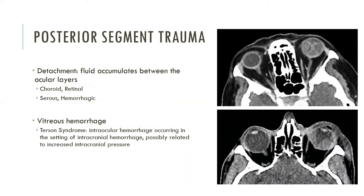Ocular trauma may cause serious fluid or blood to collect between the layers of the globe, leading to detachment of the retina or choroid from the remaining layers. Choroidal detachment occurs when fluid accumulates between the sclera and the choroid, typically assuming a biconvex or lentiform configuration along the medial and lateral walls of the globe, diverging posteriorly and creating an hourglass shape within the center of the globe on axial imaging. Retinal detachment allows fluid to accumulate between the retina and the choroid. The detachment converges at the optic disc, creating the typical V-shaped configuration on axial imaging, with the apex of the V located within the posterior globe at the optic nerve insertion.